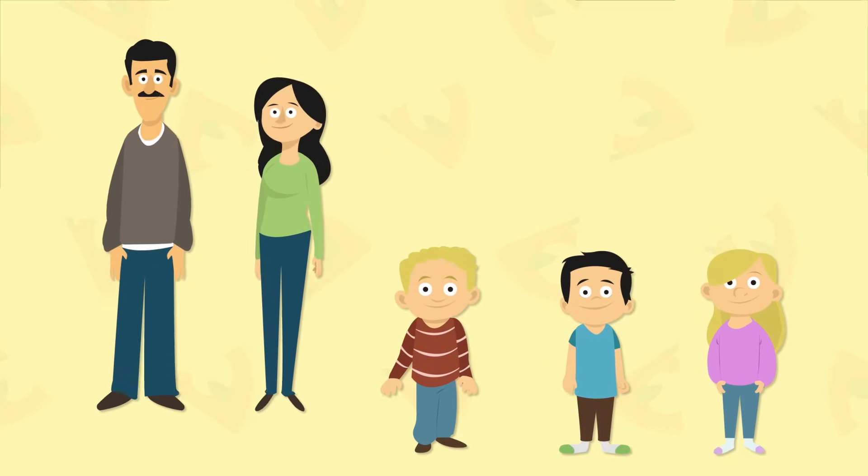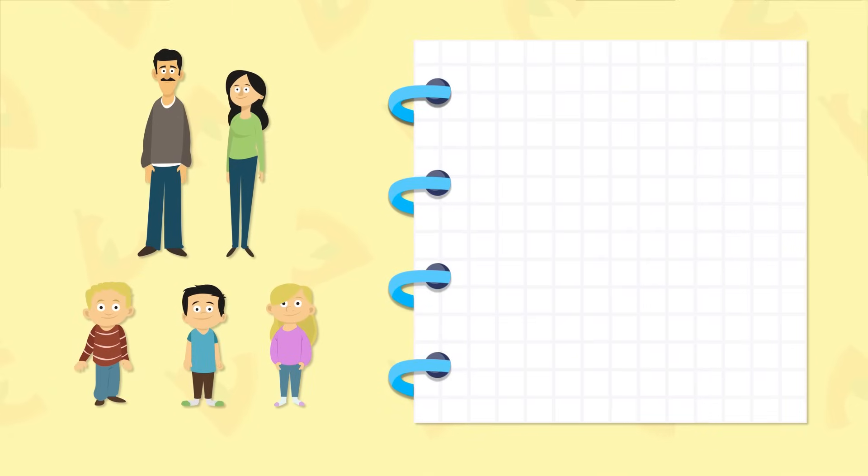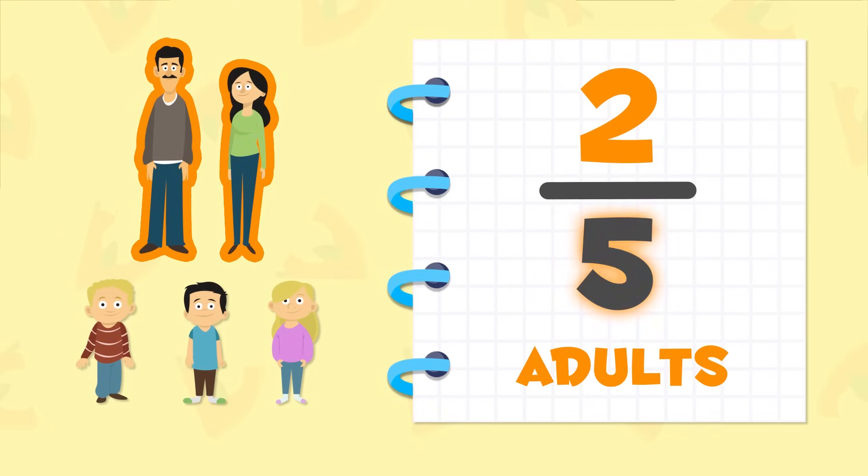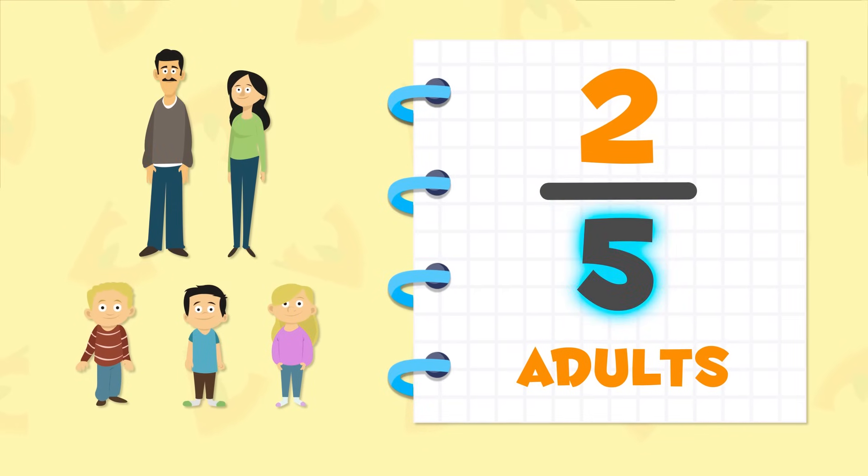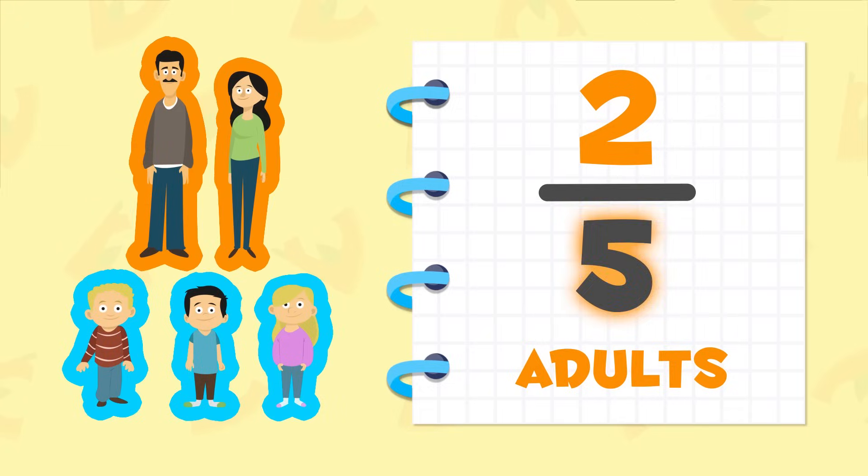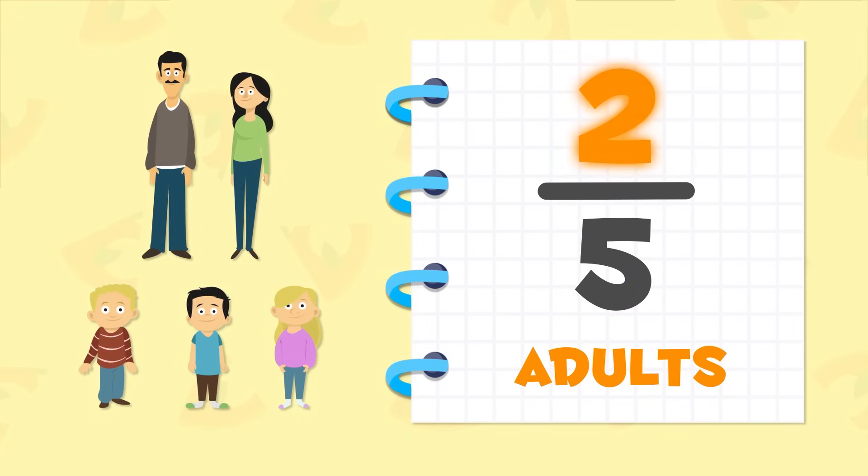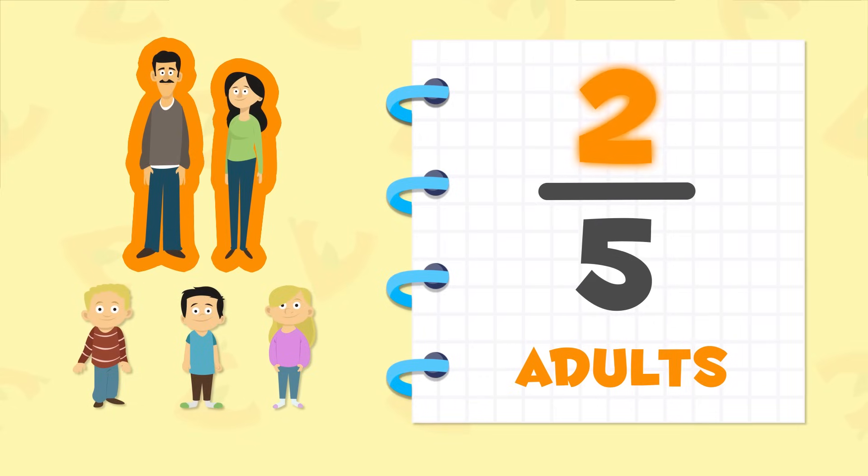Very well, so what fractions would reflect this data? I know that two-fifths of the group are adults. Number five below the line is called the denominator. It indicates that we are five people in the group. Number two above the line is called the numerator. It indicates the two people in the group are adults.